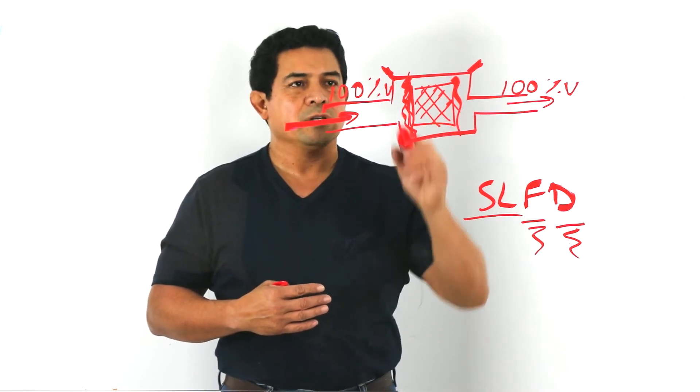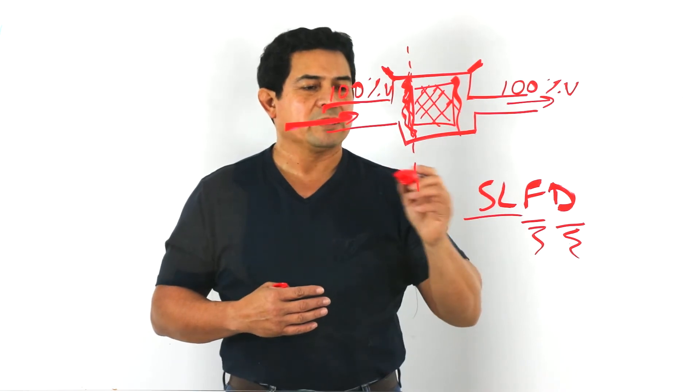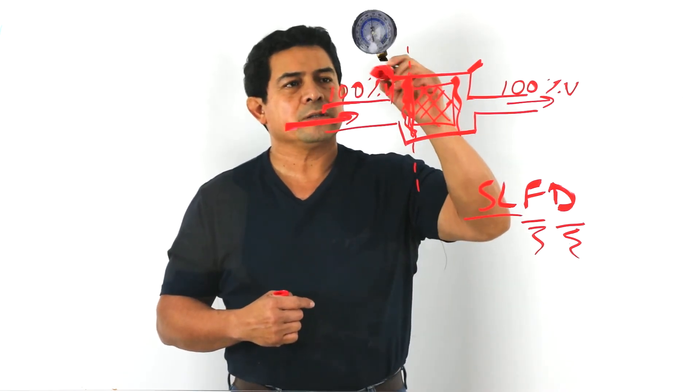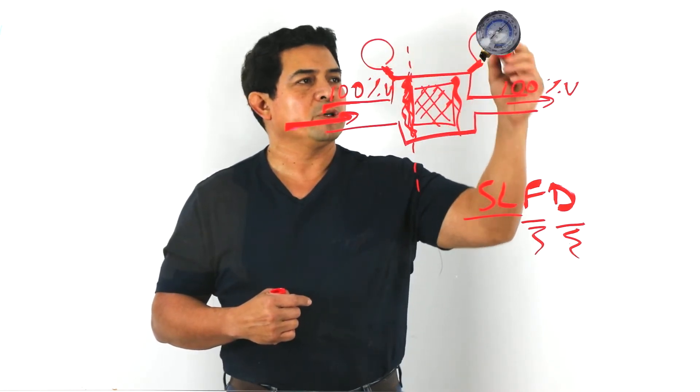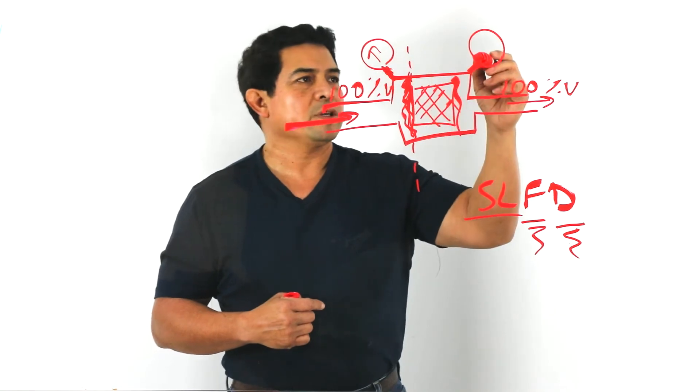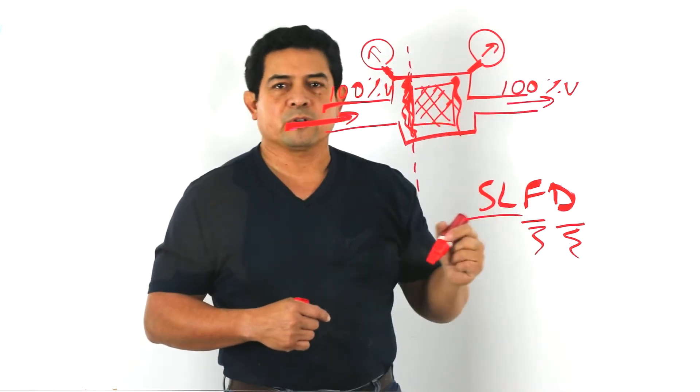Because you have a restriction, your pressure is going to be different on this side than it is on that side. These connections right here, they are so that you can put a gauge on there. So now we're going to read a pressure here, read a pressure here, or you can take the pressure here and then move it over to the other side.